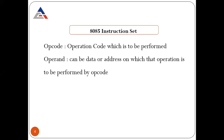In 'ADD B', one operand resides in the accumulator and the other is in register B, as given in the instruction itself. So here 'ADD' is your op code (operation code), and accumulator and B are the two operands. Another example: 'SUB C' — this instruction will subtract the contents of register C from the accumulator and the result will be stored back in the accumulator.